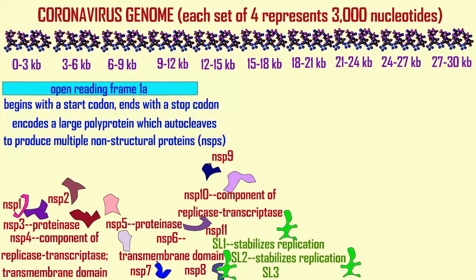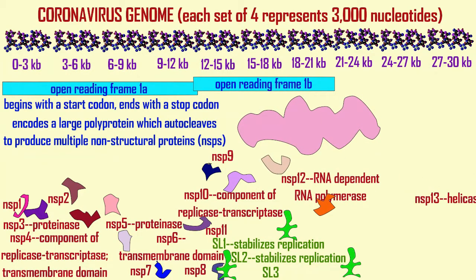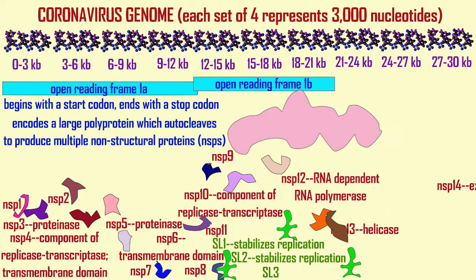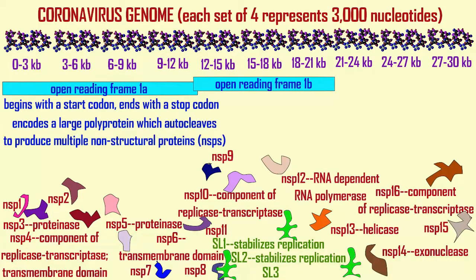These polyproteins then autocleave themselves and break into pieces — separate proteins referred to as the nonstructural proteins, or NSPs. These differ from the S, E, M, and N proteins found in the last third of the genome.